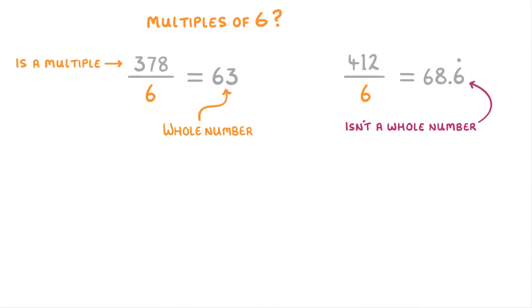We can use this rule to check if really big numbers are multiples of a certain number. For example, if we wanted to check whether 378 and 412 were multiples of 6, all we need to do is divide them both by 6. 378 divided by 6 is 63, so because 63 is a whole number, 378 must be a multiple of 6. 412 divided by 6 though is 68.6 recurring, which isn't a whole number, so 412 can't be a multiple of 6.